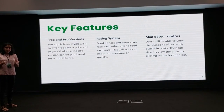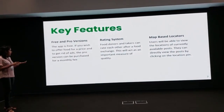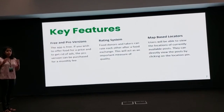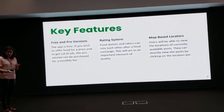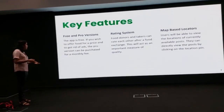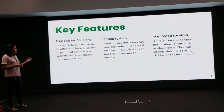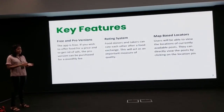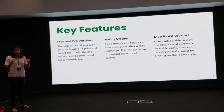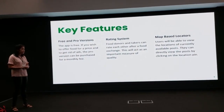Food Pulse has several key features. We offer a free and a pro version. The pro version is used if food donors wish to offer food at a price; otherwise, all offers will be free by default. The pro version will also have no advertisements. We also plan to use a rating system that allows food donors and food receivers to rate each other after a food exchange, which will act as an important measure of quality.